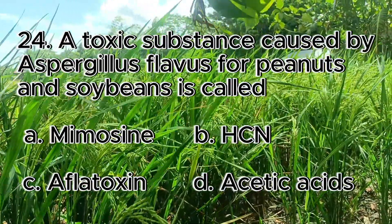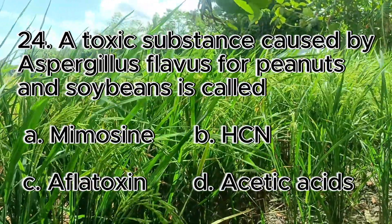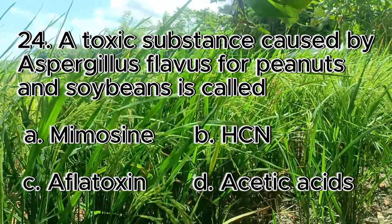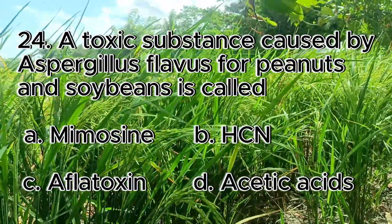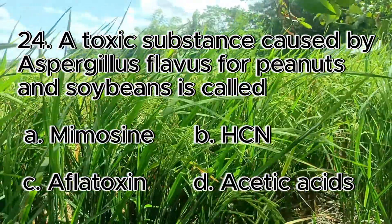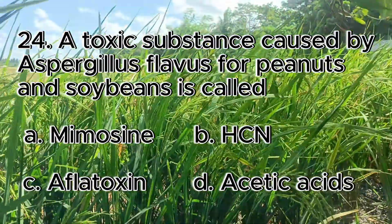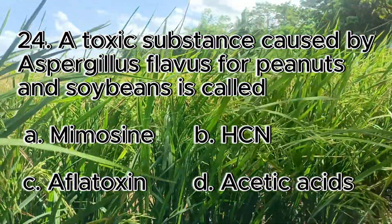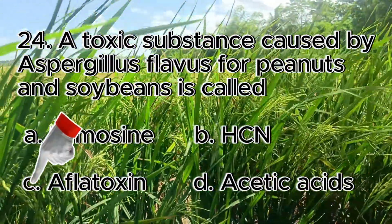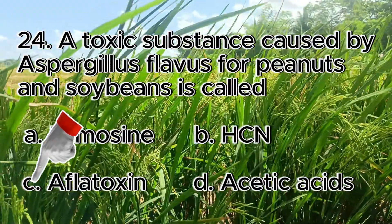Number 24. A toxic substance caused by Aspergillus flavus in peanuts and soybeans is called? A. Mimosine, B. HCN, C. Aflatoxin, D. Acetic acid. The answer is letter C, aflatoxin.